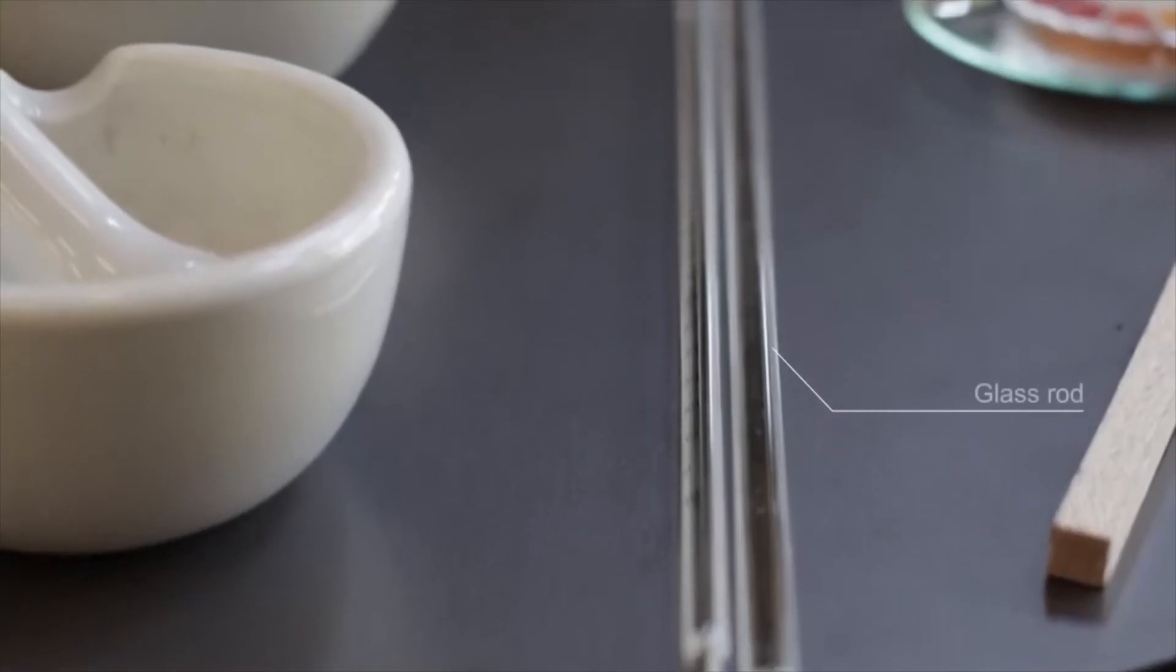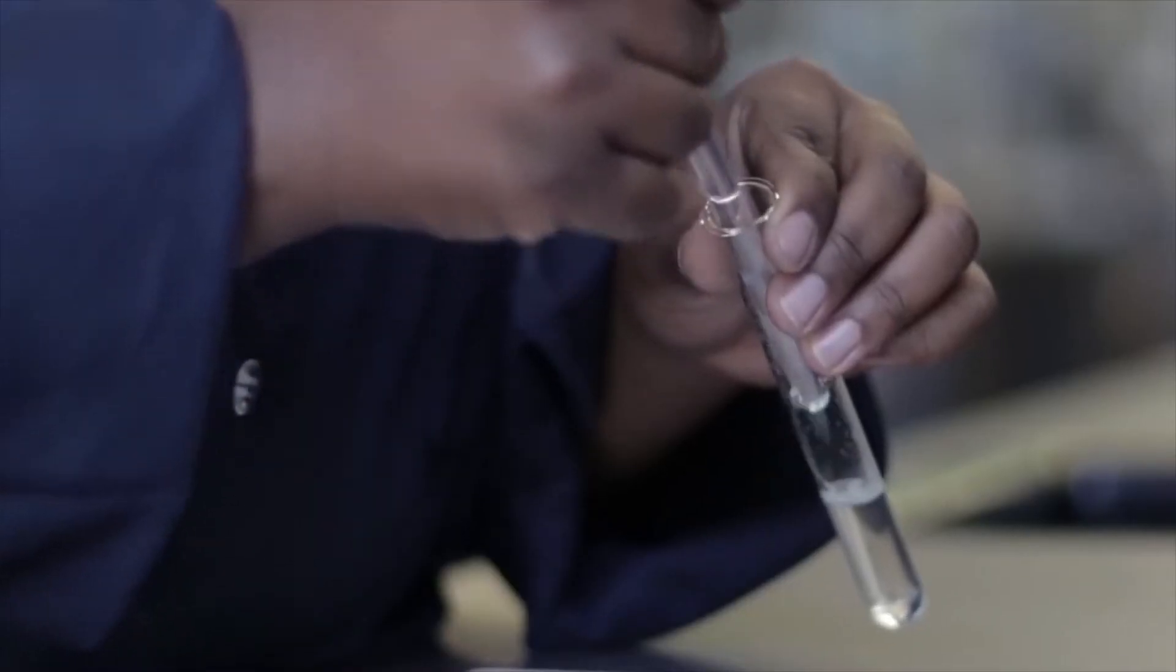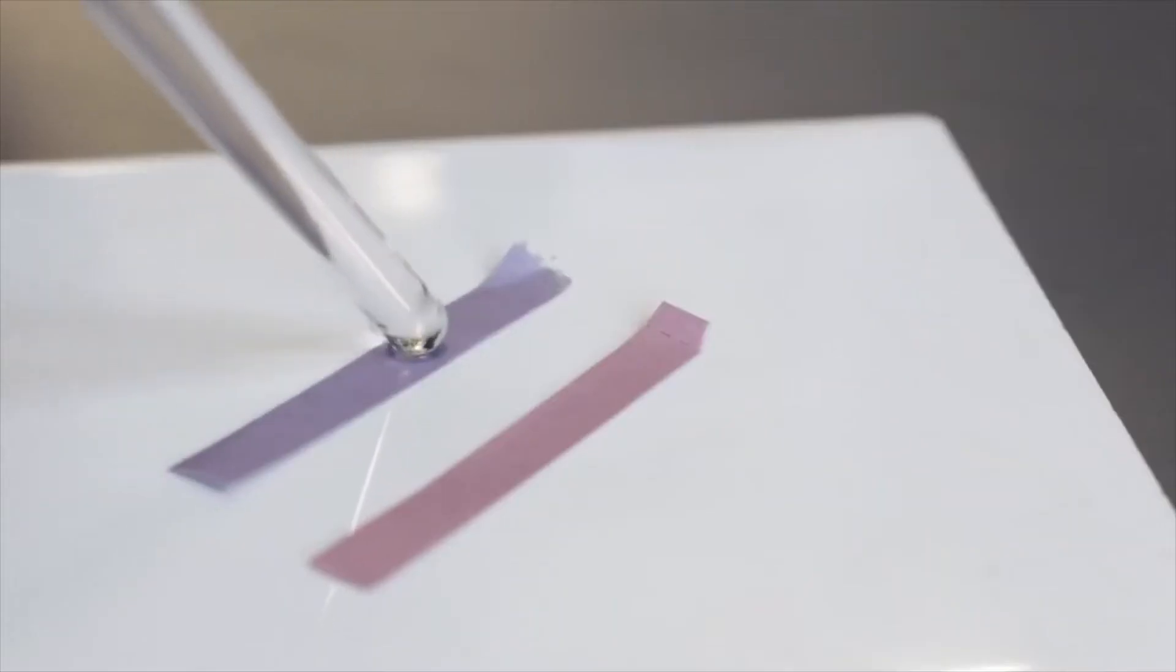A glass rod is used to mix chemicals and liquids and to dab litmus paper with solution to determine pH.